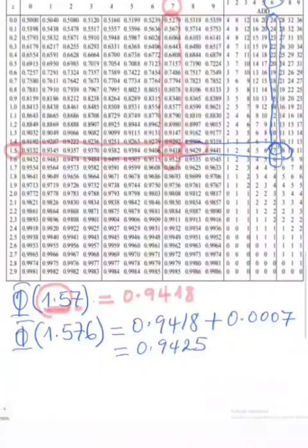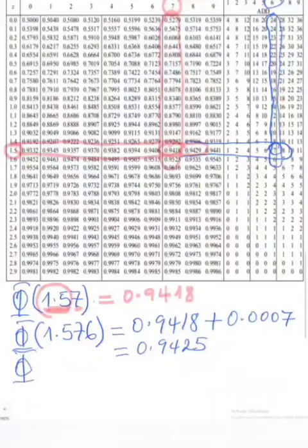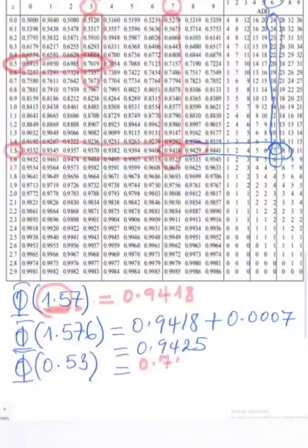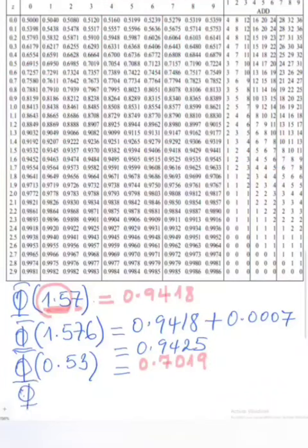That intersection gives a difference of 7, and since values in that region are divided by 10,000, that is 7/10,000 = 0.0007. Adding: 0.9418 + 0.0007 = 0.9425 as the probability for z = 1.576. Notice there is not much difference between the two values, which is why leaving z to two decimal places does not greatly affect accuracy. Now suppose my z-score is 0.53. Locate 0.5 on the first column and 3 at the top row. Where they intersect gives Φ(0.53) = 0.7019.